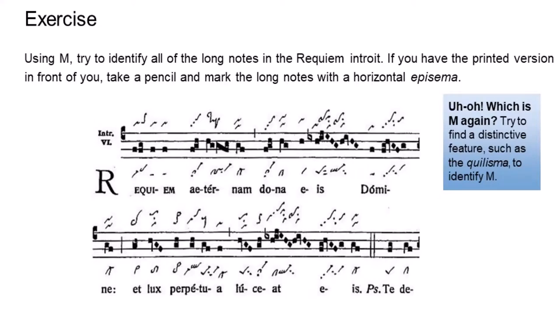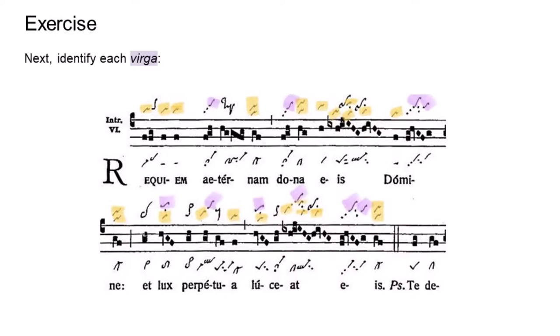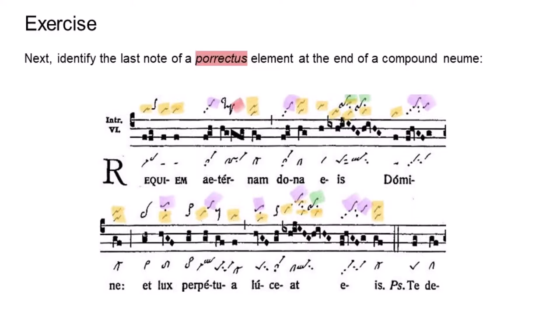Now, using the Metz neumes, try to identify all of the long notes in the Requiem introit. Start by identifying each uncinus attractulus. Next, identify the top note of each quilisma scandicus. Next, identify the last note of a parectus element at the end of a compound neume.